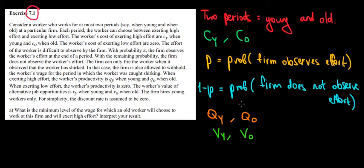With the remaining probability, the firm will not observe what the worker is doing. Now there is production, an output when he is young and when he is old. There's an alternative utility in working in a different company. Now let's have a look what happens at part A. What's going to be the minimum level of the wage for which an old worker chooses to work at this firm and will put high effort?